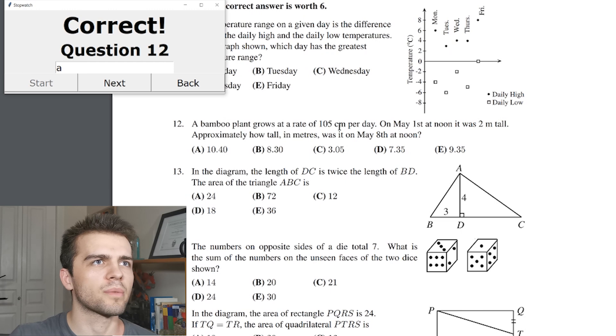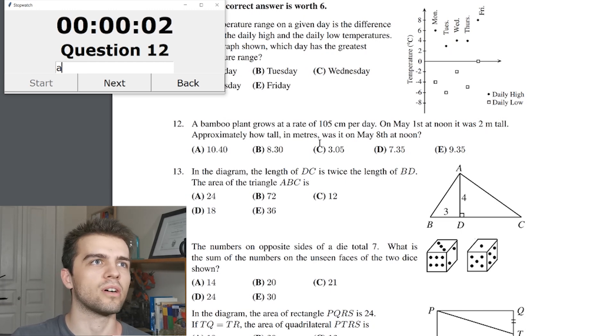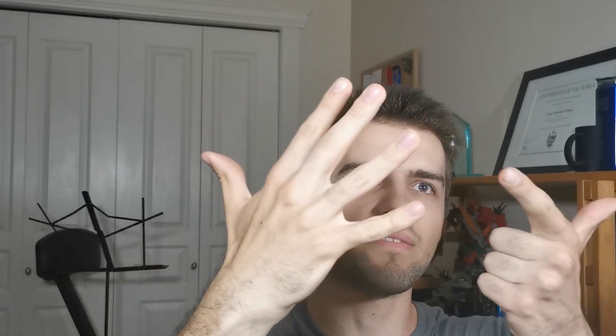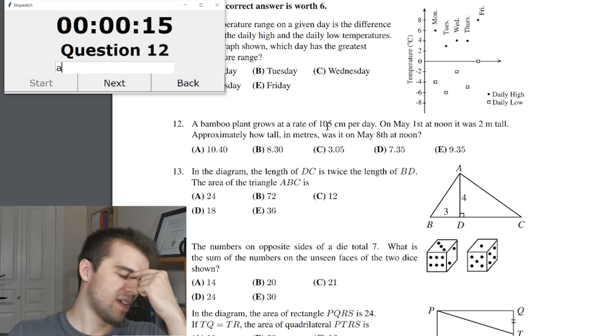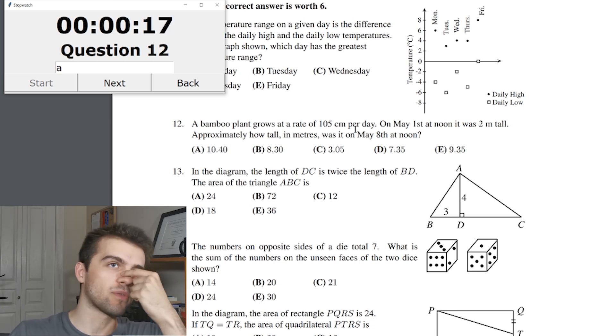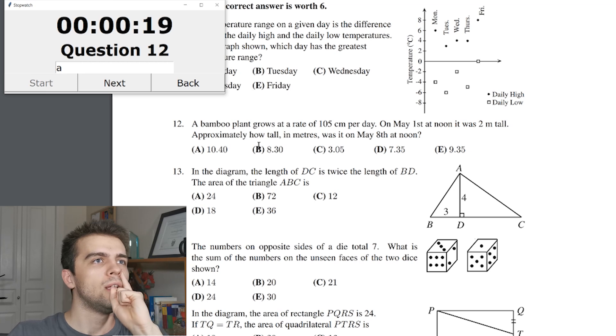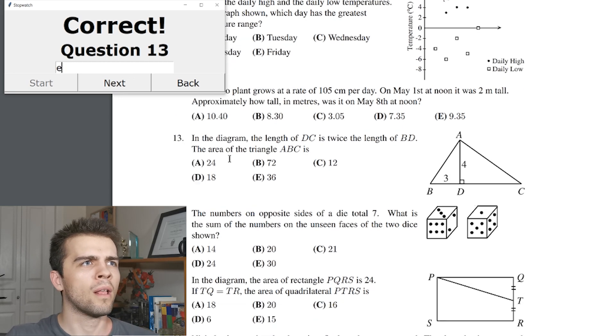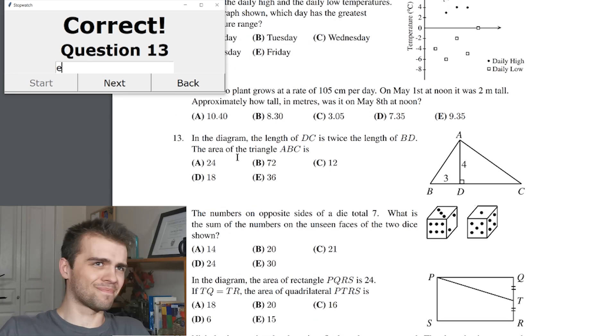A bamboo plant grows at a rate of 105 centimeters per day. On May 1st at noon, it was 2 meters tall. How tall will it be on May 8th at noon? Well, that's 2, 3, 4, 5, 6, 7, 8. Seven days. 7 times 105 is 700. 7.35 meters. So it's got to be 9.35 meters. Answer is E. Alright, good. Woo!